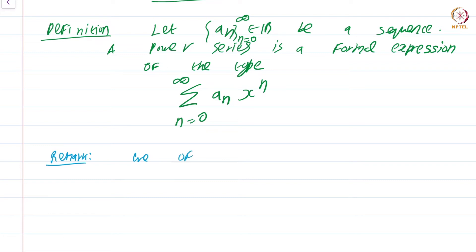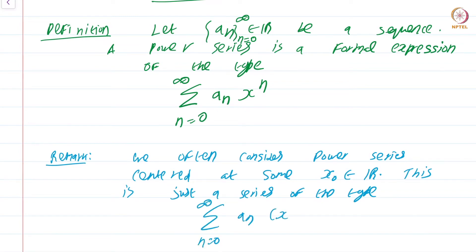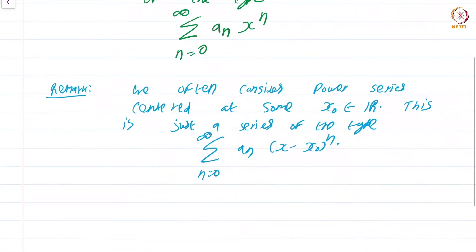We often consider power series centered at some x₀ in ℝ. This is just a series of the type summation n equals 0 to infinity aₙ (x − x₀)ⁿ. However, the original definition we have given and the theory we will develop is more than sufficient to deal with these more general series centered at some point x₀. It is simpler to study just when the center is the origin, and the theory in the general case is straightforward to generalize.